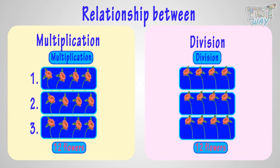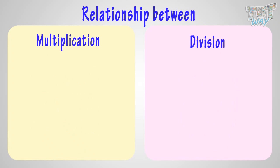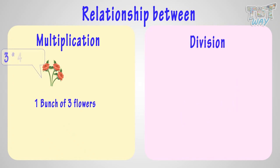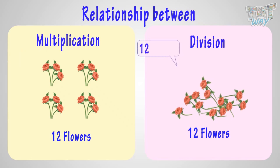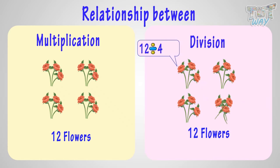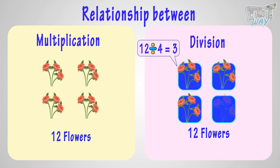And distributing twelve flowers in three rows gives us four flowers in each row. Can you see the relationship here? Let's try to understand better. Here, you have a bunch of three flowers. If you multiply it with four, you get four bunches of three flowers each — total twelve flowers. If you have twelve flowers and divide them into four groups, you will get three flowers each in a group.